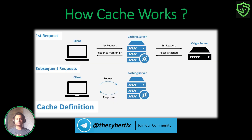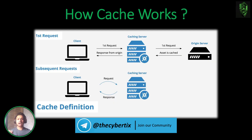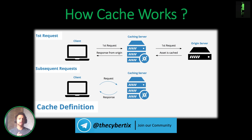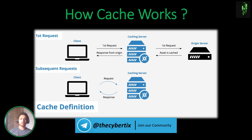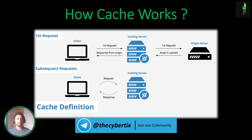So whenever in the future you send the same request, it will be served directly from memory. Let's understand how a cache works: when you send a first request from the client side, it goes to the caching server, which checks whether a cached response exists. If a response is found, it is sent directly. If not, the request passes to the origin server, which returns a response that is then saved in the caching server.